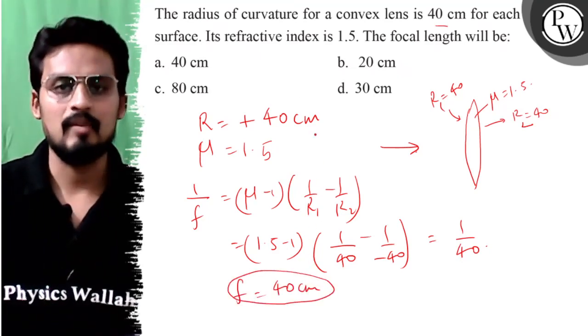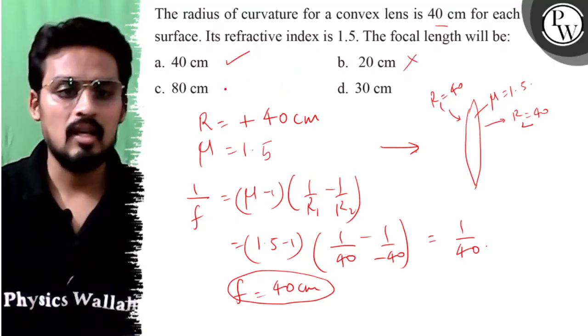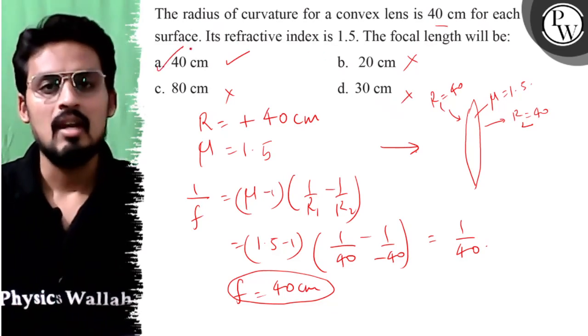Or yeh hi mera final answer ban gaya. Options tip check karte hai to option A correct ho gaya, option B wrong ho gaya, option C wrong ho gaya, option D wrong ho gaya. The correct answer is option A. All the best.